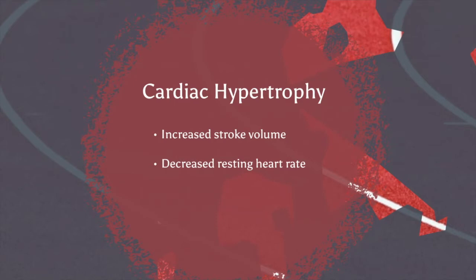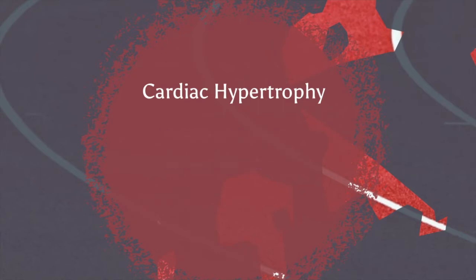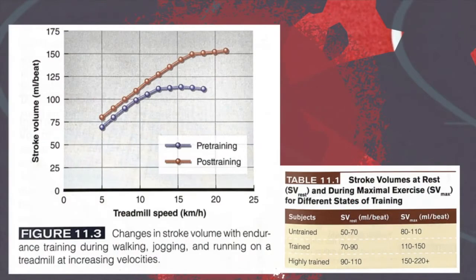This leads to an increase in stroke volume, and because stroke volume increases, resting heart rate decreases, because the heart doesn't need to pump as many times to maintain the same cardiac output. As we can see in this graph, from an athlete taking part in endurance training, the blue line represents pre-training and the red line represents post-training, showing a significant increase in stroke volume.